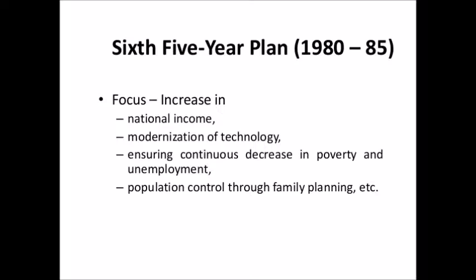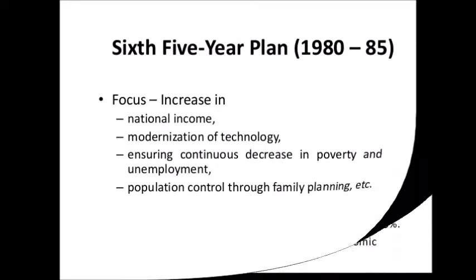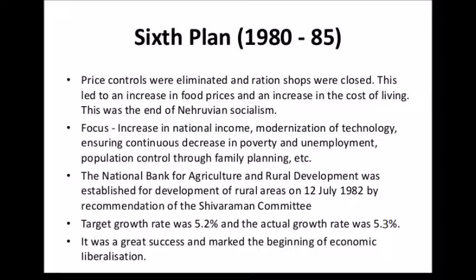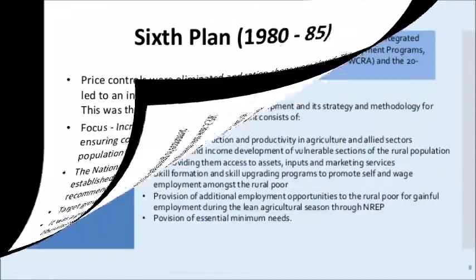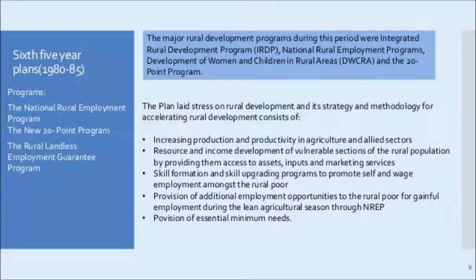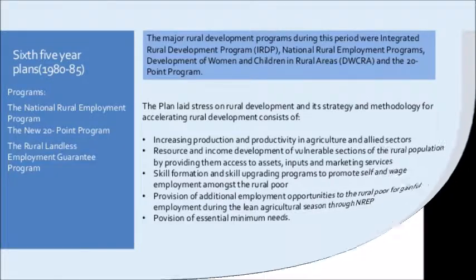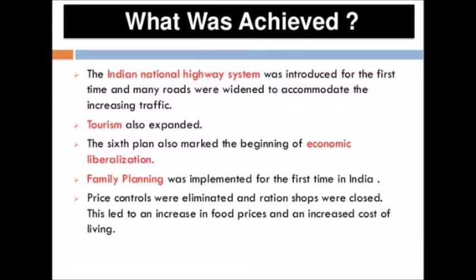Poverty alleviation was given the top priority, with schemes for transferring skills and assets and providing slack season employment. The actual growth of national income was higher at 5.3%. There was an increase of 16% per annum in real investment in fixed assets by the private sector. Poverty declined from 48.3% in 1977-78 to 37.4% in 1983-84.